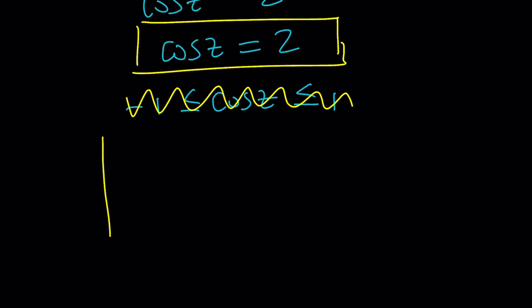So imagine you can draw a triangle like this. And this is my angle z. That's the opposite side, this is the adjacent side, and this is the hypotenuse. Since cosine is adjacent over hypotenuse, I'm going to assume this is a two and that's a one.